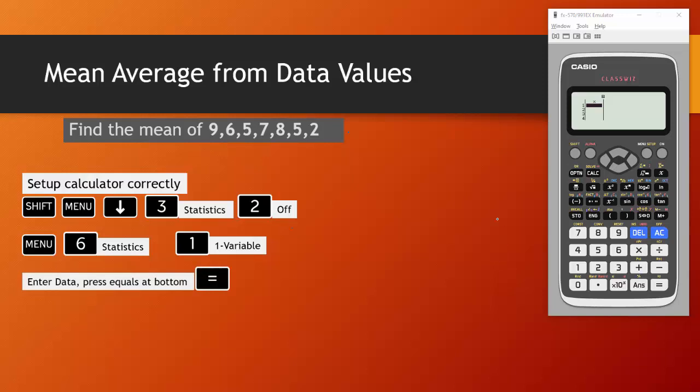We now have an empty table. So we now need to enter our data. So our data is these numbers here: nine, six, press equals after each one, five, seven, eight, five and two. Make sure you press equals after the last one so it takes you on to the next line. Now you're going to press AC.